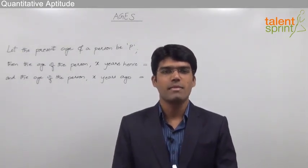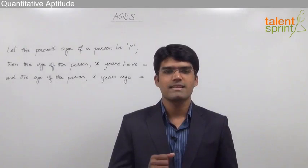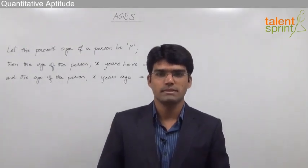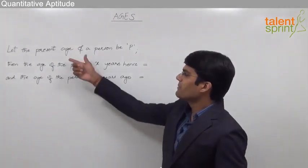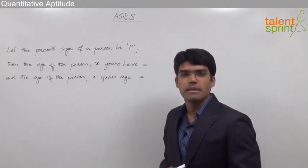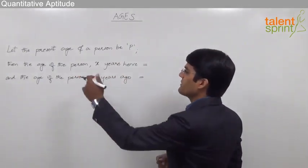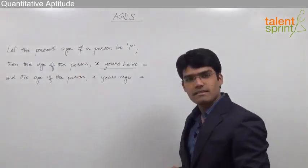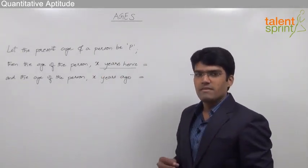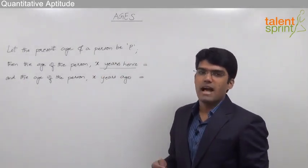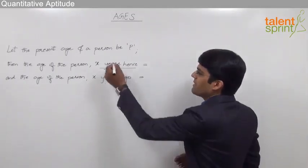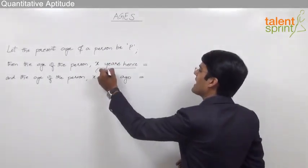Let us understand this with the help of a simple example. Let us assume that the present age of a person is P. Then the age of the person X years hence - remember friends, when we say X years hence, it means after X years.